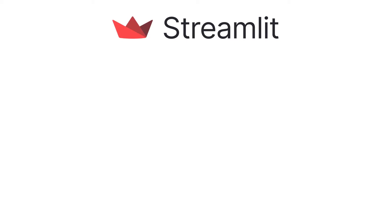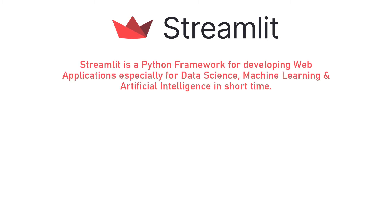In this series we will talk about Streamlit. Before we jump into actual development, it is very important to understand what Streamlit is. Streamlit is a Python framework for developing web applications, especially for data science, machine learning, and artificial intelligence in a short time. So it is a Python framework used for web-based application development.